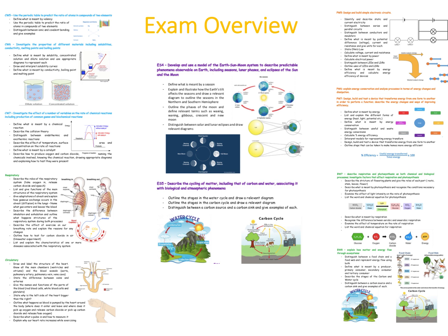This is a couple of snippets from the exam overview booklet. You can see chemistry ones, biology ones, Earth and Space, and physics. In the actual booklet, the entire course overview is there. For example, the learning outcome about developing a model of the Earth-Sun-Moon system is broken down into learning intentions: What do we mean by a season? Can we explain and illustrate how the Earth's tilt affects the seasons and draw relevant diagrams? Do you know the phases of the moon — terms such as waxing, waning, gibbous, crescent, and new moon? What's the difference between solar and lunar eclipses, and can you draw relevant diagrams?